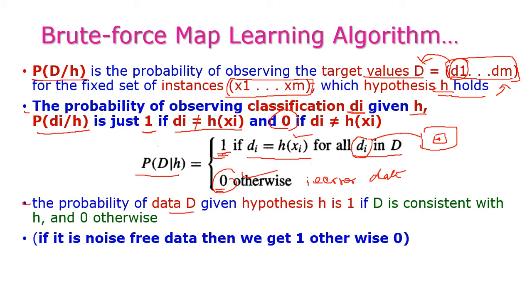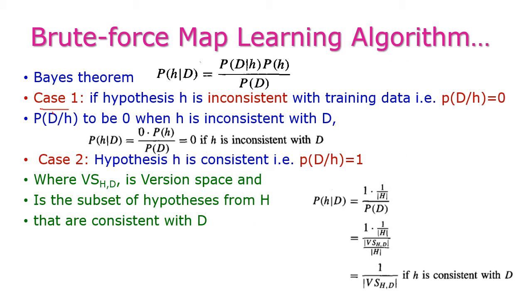The probability of data D given hypothesis H is 1 if D is consistent with H — that is, if D is reliable to H. Otherwise it is 0. We get 0 when there is some noise. So there are two cases: if H is inconsistent, then P(D|H) = 0; if H is consistent, then P(D|H) = 1.